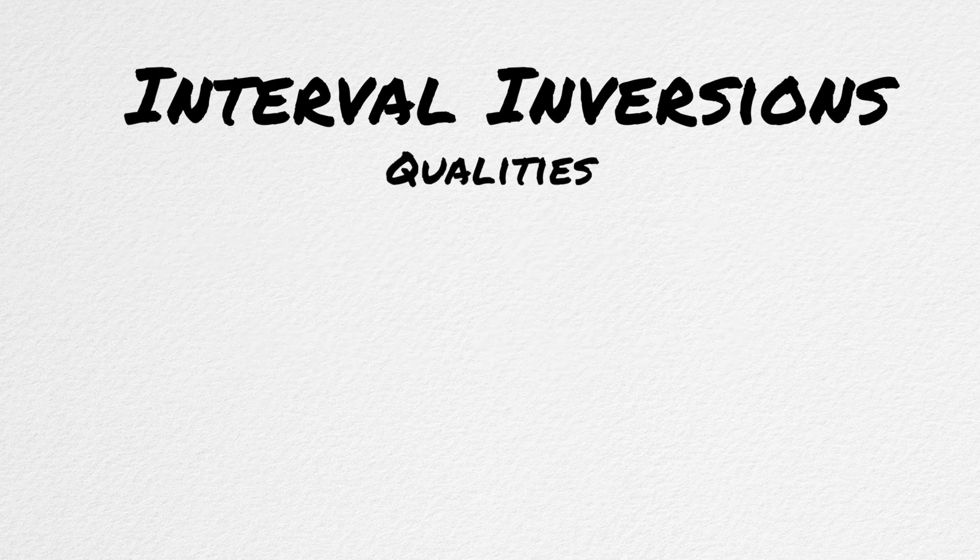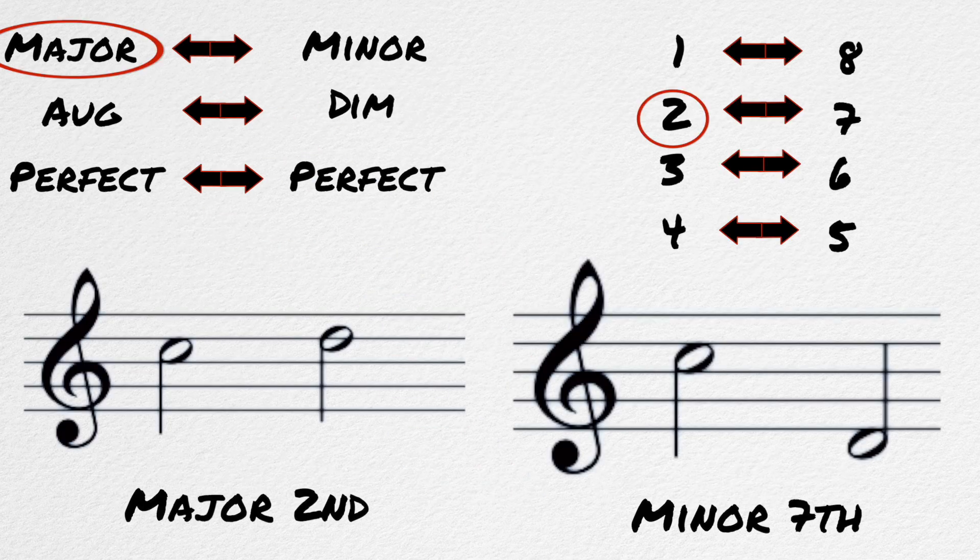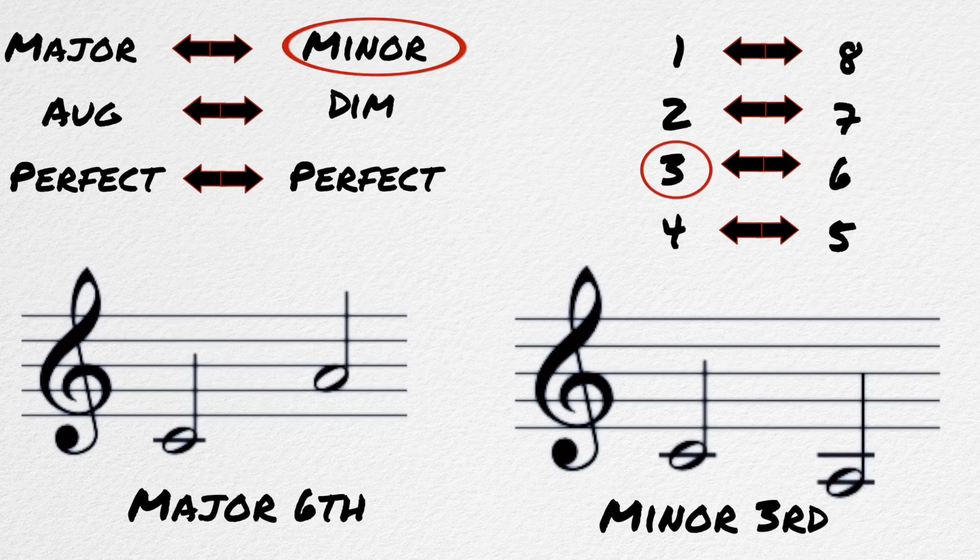The qualities of these intervals will also change in a predictable pattern. So major intervals will become minor, minor will become major, diminished intervals will become augmented, and perfect intervals will stay perfect. So the inverse of a major second is a minor seventh. The inverse of a major sixth is a minor third.